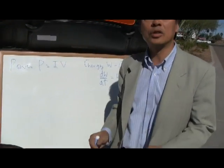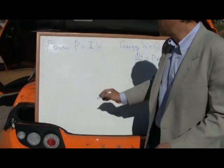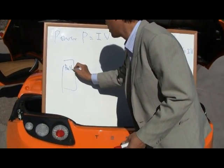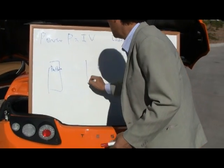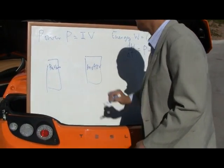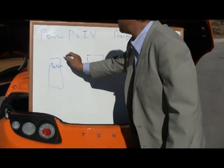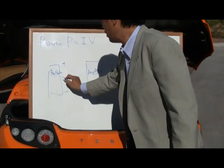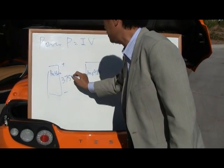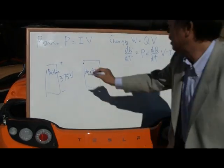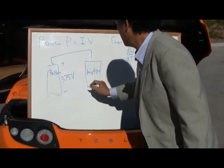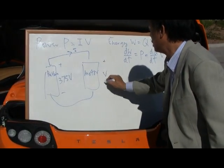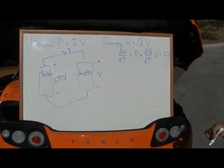Today we're going to talk about the power convention, which is if you have batteries and you have here a motor. If this is the positive and the negative, and suppose in this Tesla car here you have a voltage of 375 volts, and then you have the current I going through a voltage V in the motor.